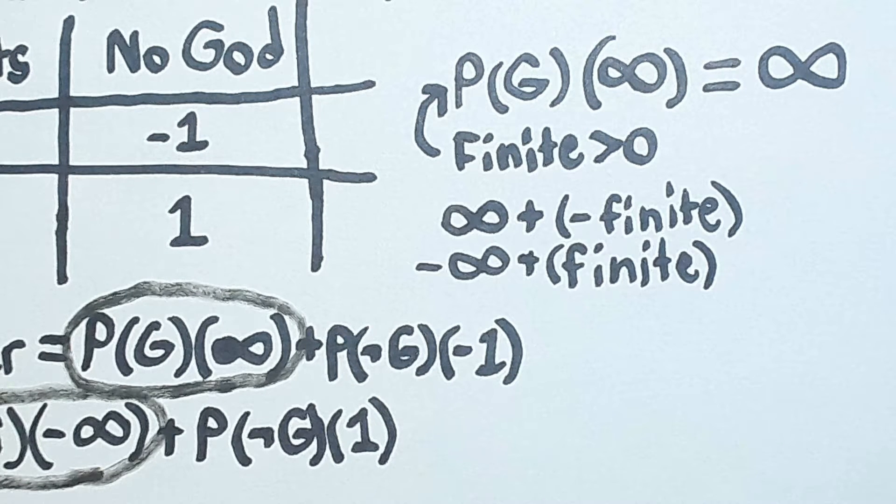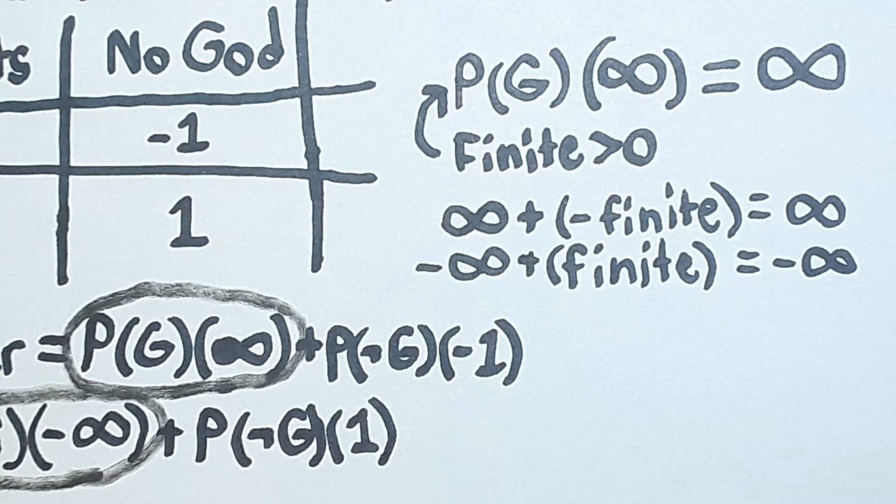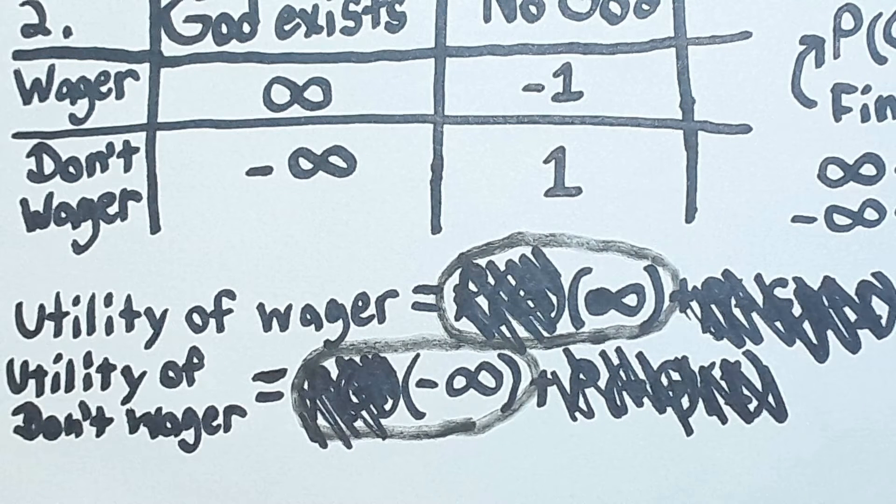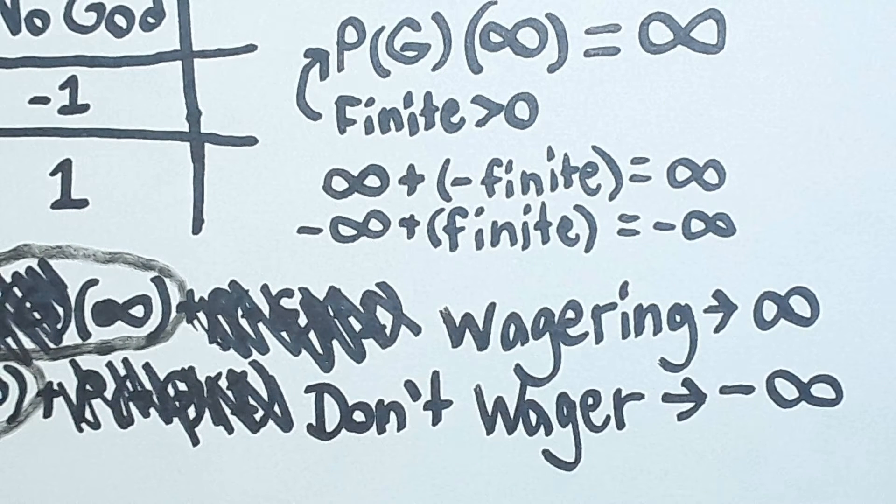Similarly, when we add or subtract any finite amount from infinity, we still have infinity. So in the end, all the finite parts of the equation can really just be ignored and we're left with wagering on God having an infinite expected utility, and not wagering on God having a negative infinite expected utility.